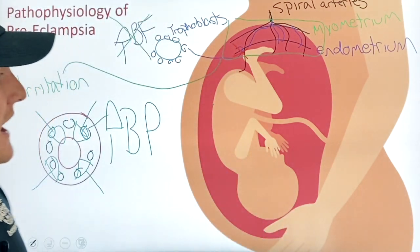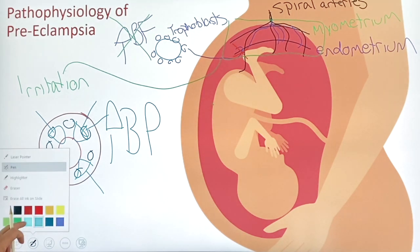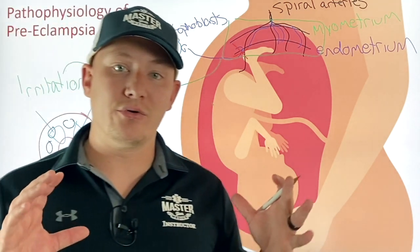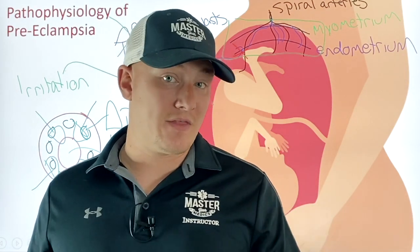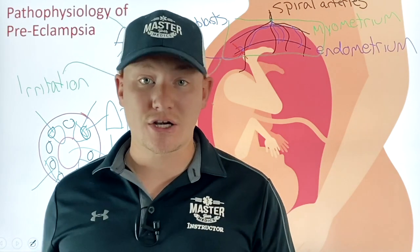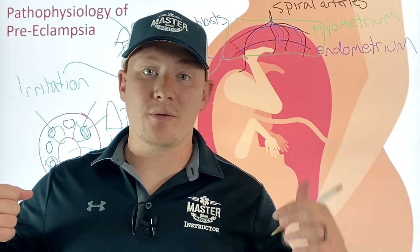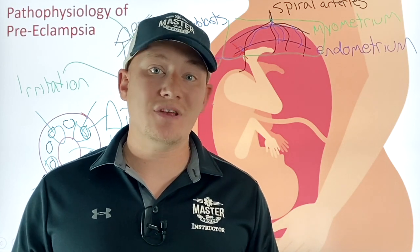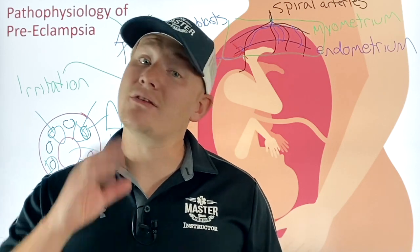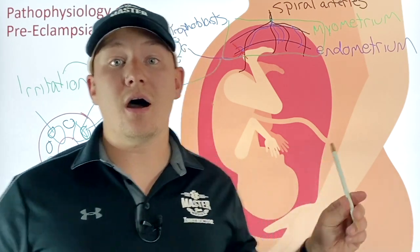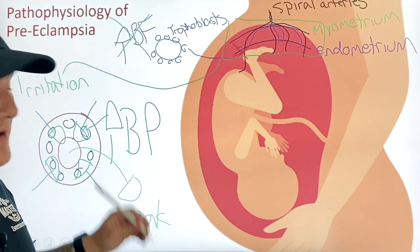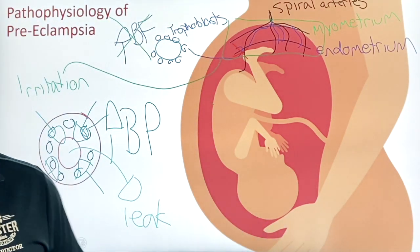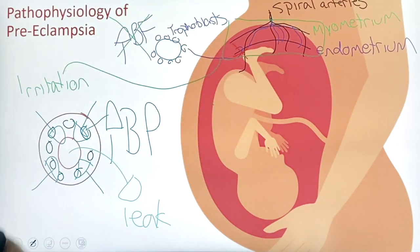We're also going to have permeability problems, meaning these vessels are going to start to get leaky, which creates edema. Changes in hydrostatic pressures due to the increased blood pressure also cause further edema. This is why in a preeclamptic situation we typically see a lot of edema in the feet, the hands, and the face — simply because of the permeability of these vessels and the vasoconstriction that changes hydrostatic pressures within the capillary beds. Those are the key mechanisms creating the big problem of preeclampsia.